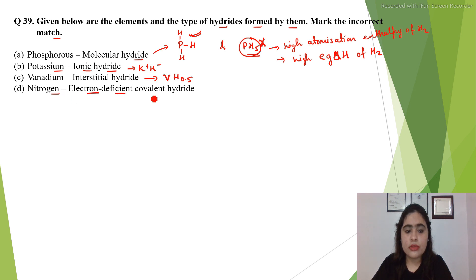Nitrogen is listed as electron-deficient covalent hydride. This matching is incorrect because nitrogen forms an electron excess covalent hydride. You can see there is an excess lone pair of electrons, so it's an electron excess hydride.